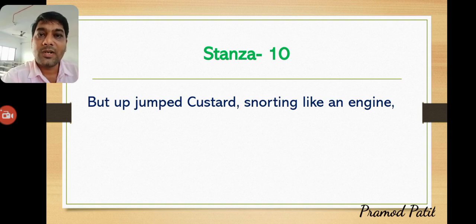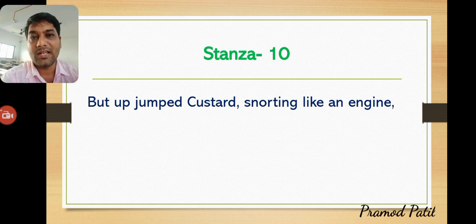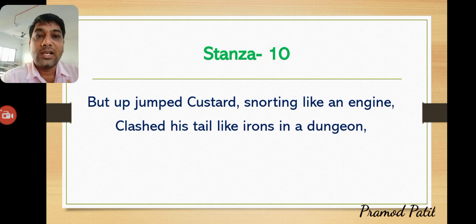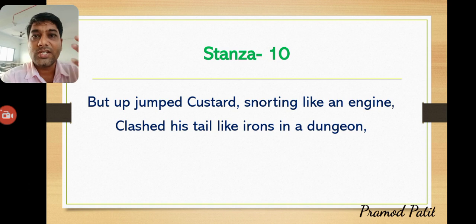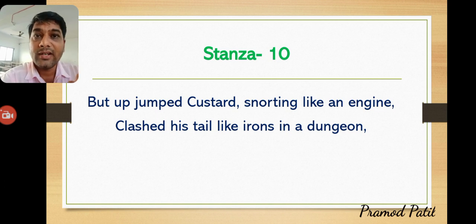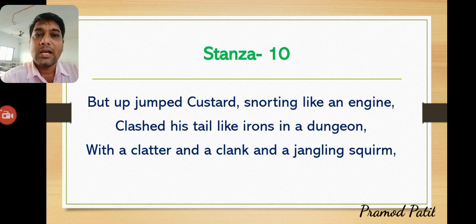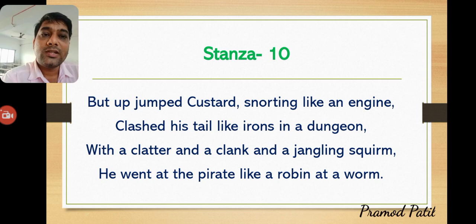But Custard jumped up. He faced the pirate, snarling like an engine, breathing fire from his mouth, with his tail clashing like iron. He became like a furnace — very red and strong. With clatter, clank, and jingling squirm, he charged at the pirate like a robin at a worm. The coward dragon finally showed his true power.